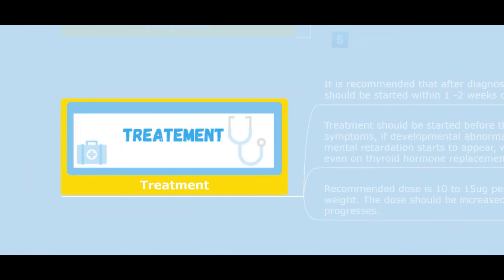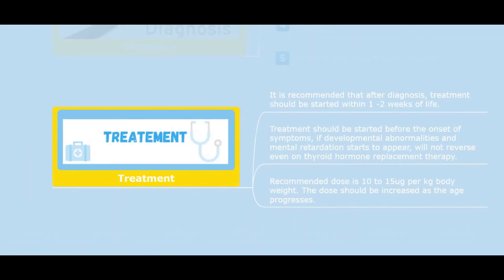Treatment: it is recommended that after diagnosis, treatment should be started within one to two weeks of life, and before the onset of symptoms. If developmental abnormalities and mental retardation begin to appear, they will not reverse even on thyroid hormone replacement therapy. The recommended dose is 10 to 15 micrograms per kilogram body weight, and the dose should be increased as the age progresses.